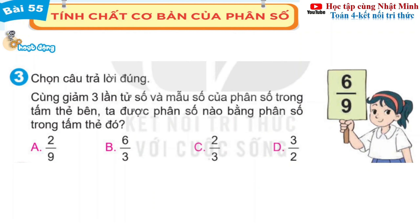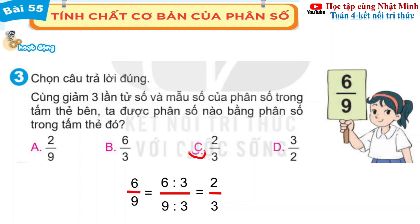Bài 3 chọn câu trả lời đúng. Cùng giảm tử số và mẫu số của phân số trong tấm thẻ bên, ta được phân số nào bằng phân số đó. Đây, 6 phần 9 bằng 6 chia cho 3 trên 9 chia cho 3 bằng 2 phần 3. Vậy đáp án C là đáp án đúng.